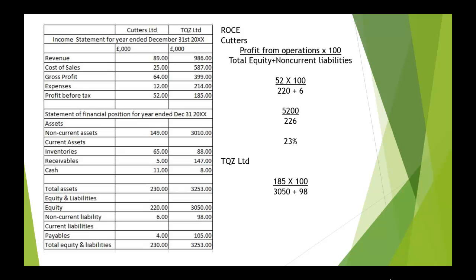For TQZ Limited: 185 times 100, over 3,050 plus 98. Working that out, it comes to 5.8%.